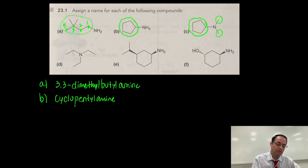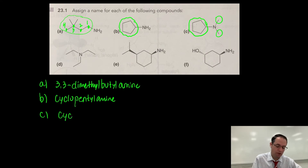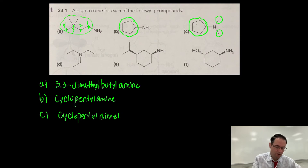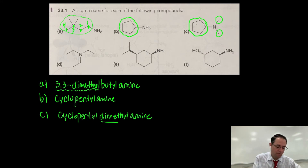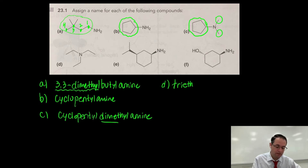In C, we have a dimethyl and then a cyclopentyl. C comes before M alphabetically, so that's cyclopentyl first. And remember, when you have two methyl groups, you combine them — so you write dimethyl. The full name is cyclopentyl dimethylamine. In molecule D, we already discussed this — this is called triethylamine.